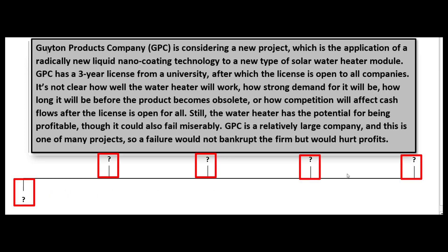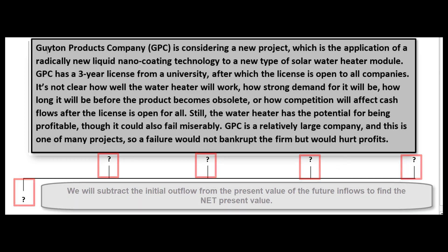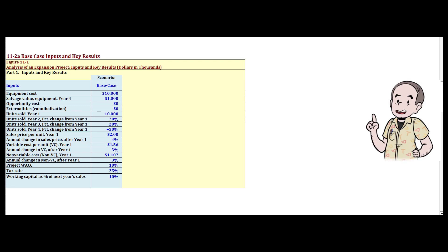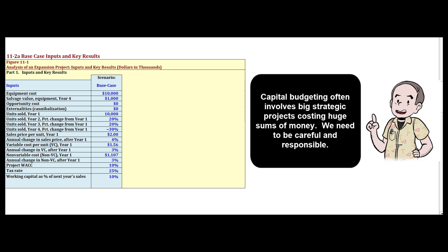Then we'll find the present value of those future cash flows at our weighted average cost of capital, subtract our initial investment, and if we have a positive net present value the project is a go. Capital budgeting has serious consequences for a company — it's big amounts of money invested for long periods of time. A capital budgeting mistake is very costly, so we're going to be very careful and make very precise estimates of all aspects of this project.